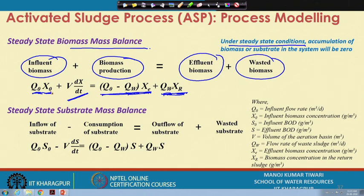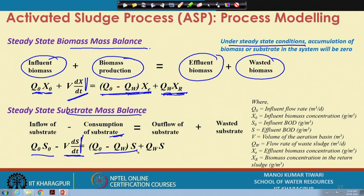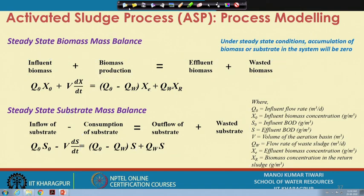Similarly, we can write the steady-state substrate mass balance where the inflow of substrate is Q₀S₀. Substrate is not being produced but is actually being consumed. So consumption of substrate will be minus V·dS/dt, analogous to the biomass term. The rate of biomass production is dX/dt; rate of substrate consumption is dS/dt. The outflow of substrate follows the same form with S replacing X.